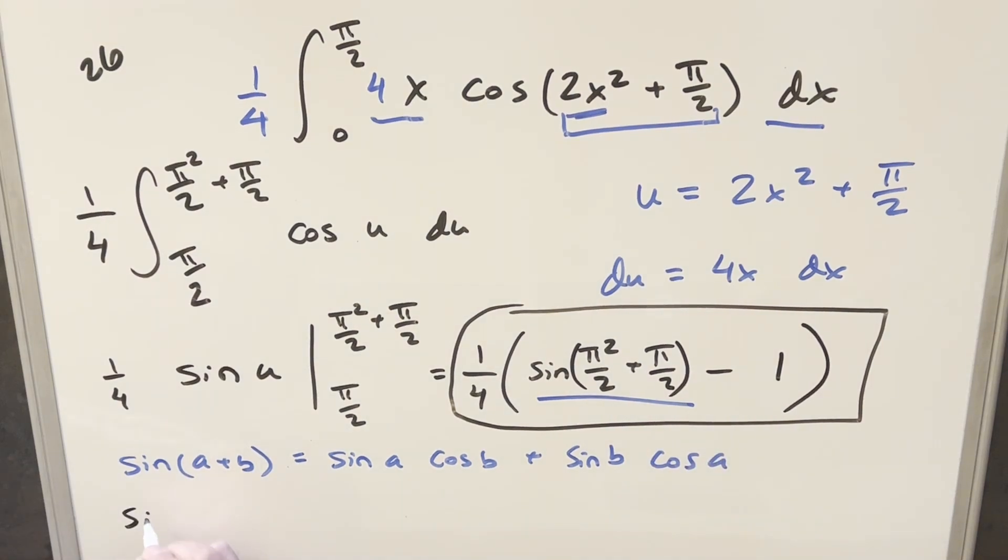So when we do this for what we have here, sine of pi squared over 2 plus pi over 2. Using the formula, we're going to have sine pi squared over 2 times cosine pi over 2, but that's just going to be a 0 right there at pi over 2. And then for the second part, we want sine of pi over 2. That's just a 1 times cosine of pi squared over 2.